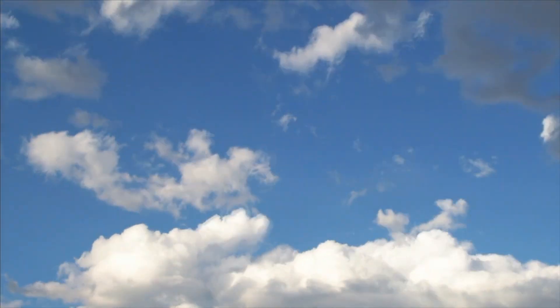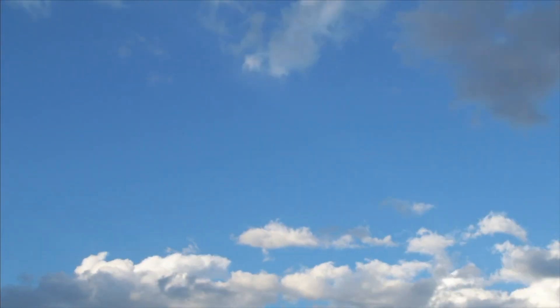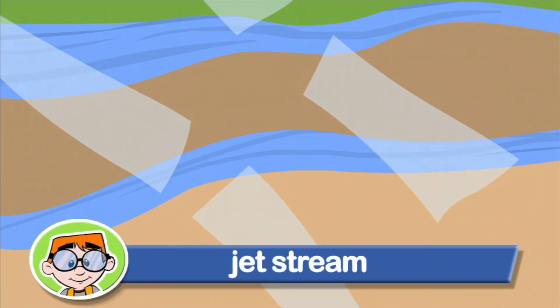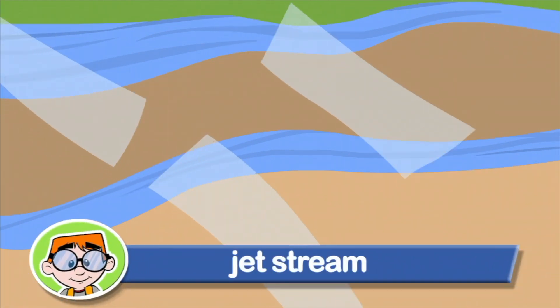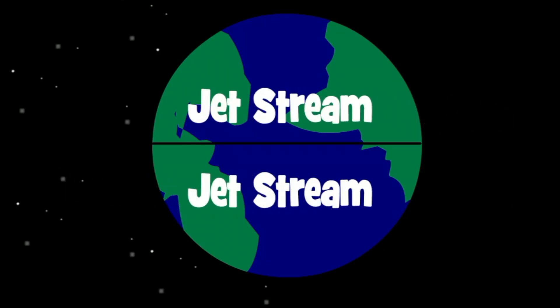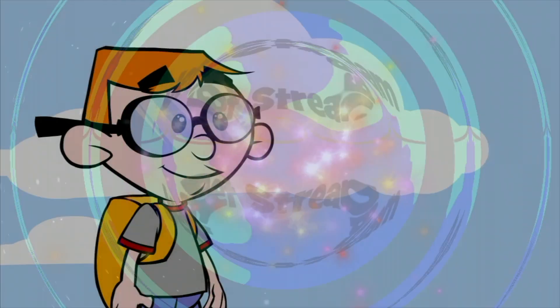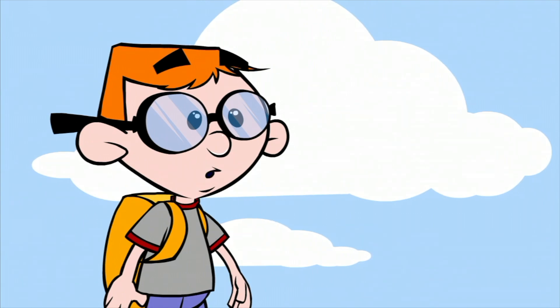Very high in the atmosphere, there's a large, fast-flowing stream of air! This air blows above the surface of the Earth — it's called the jet stream! There's one jet stream over each hemisphere! Okay, that's really cool!